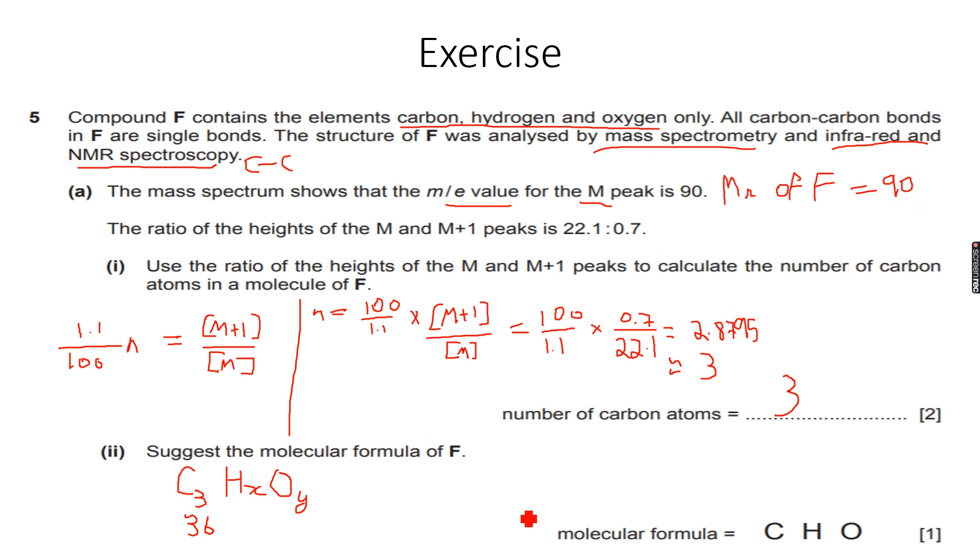The molecular mass is 90, so the mass I have only because of H and O will be 90 minus 36, because I'm subtracting the mass of all the carbon. This will give me the mass contributed by the oxygen and hydrogens.